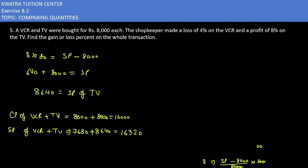Now you can see that this is showing us profit, obviously, because selling price is greater than the cost price combined.